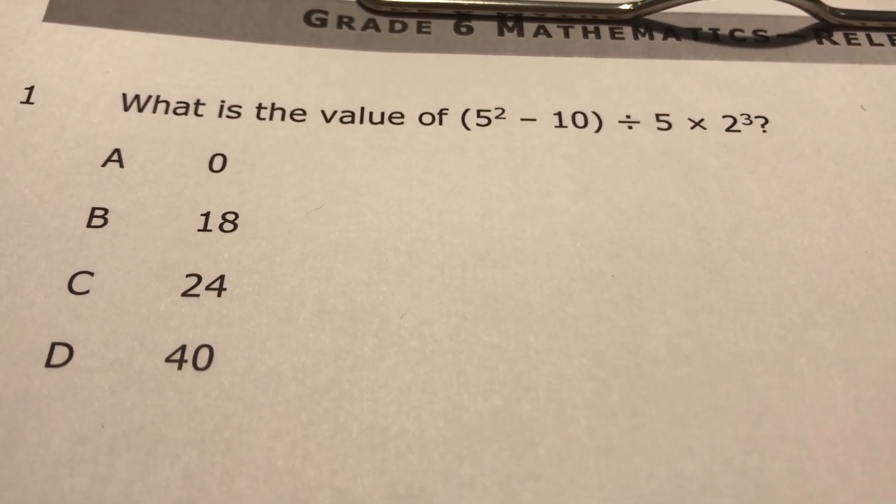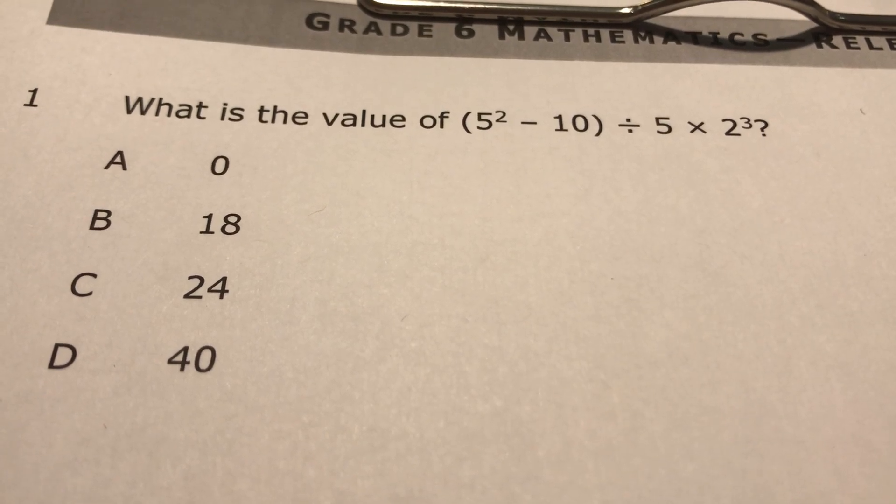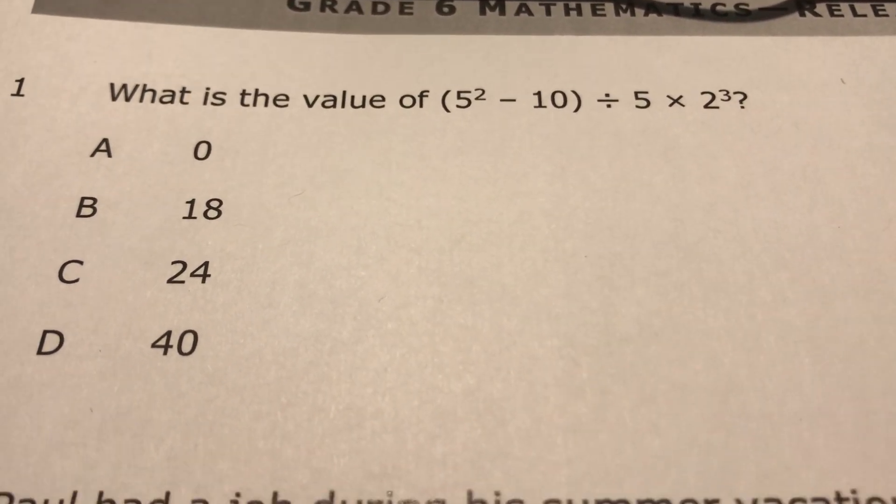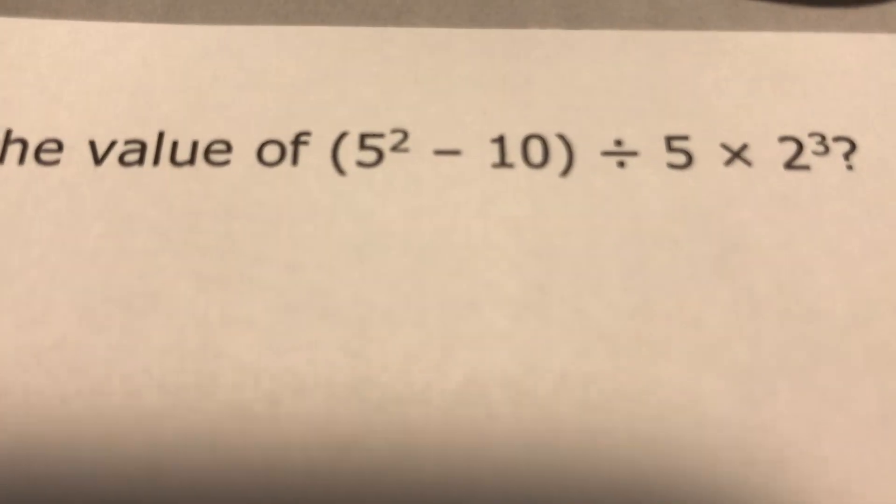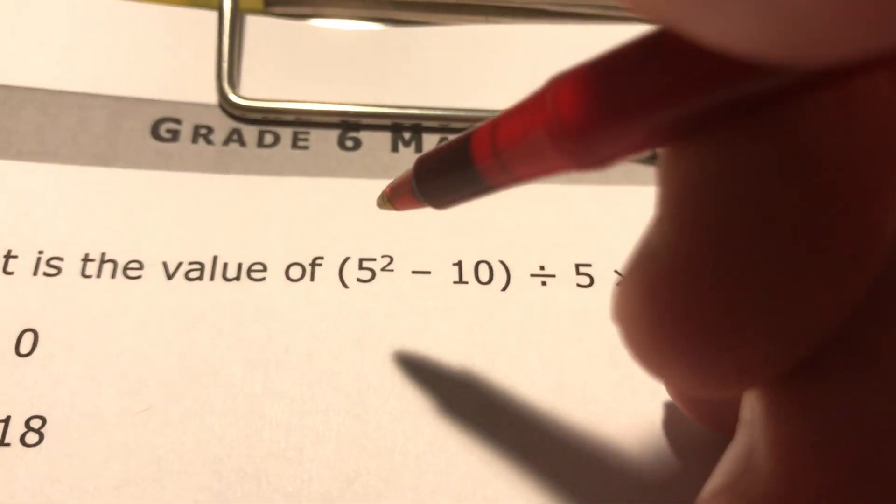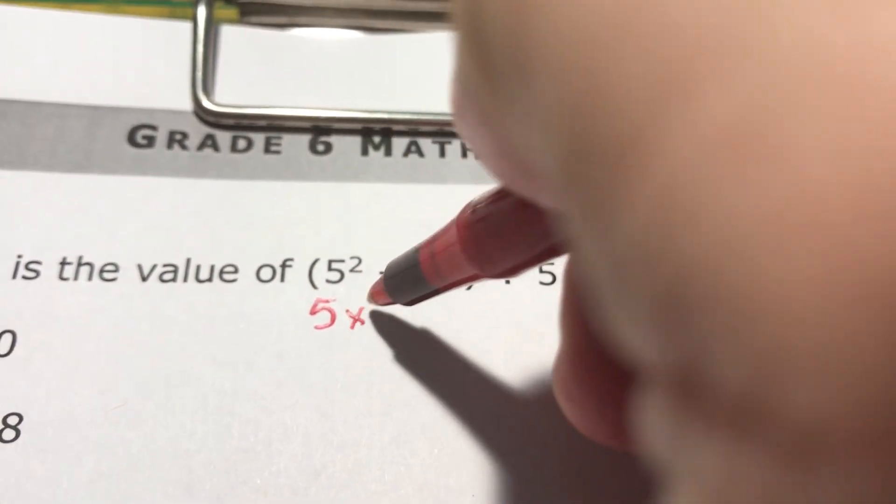If you know the order of operations, you know that we have to start with parentheses and we have to do what's in parentheses in the order of operations. So that means we don't do the minus first, we do 5 to the 2nd power first. So 5 to the 2nd power is the same thing as 5 times 5, and that would be 25.